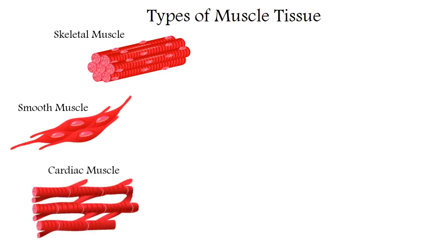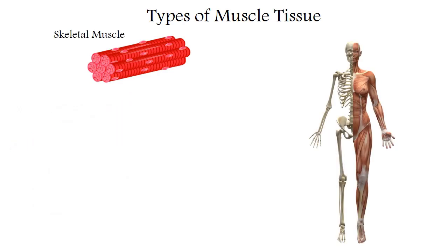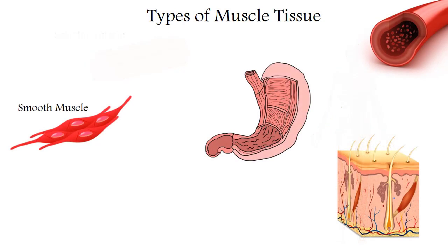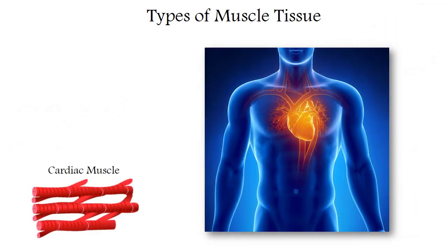Skeletal forms our skeletal muscles; smooth forms the walls of blood vessels and various internal organs. It is also located in the skin and regulates heat transfer. The third is cardiac muscle tissue, which forms the muscular wall of our heart, and thanks to it the human heart beats without ceasing from the prenatal period of life until death.